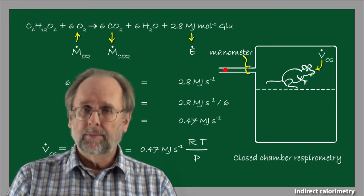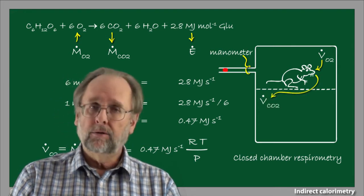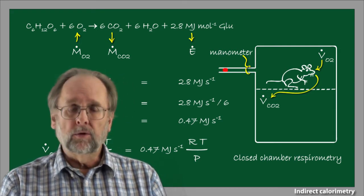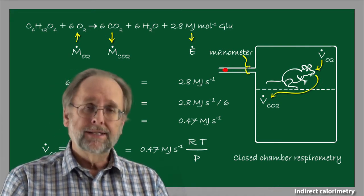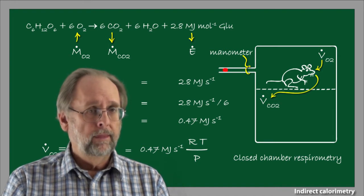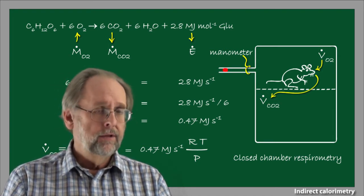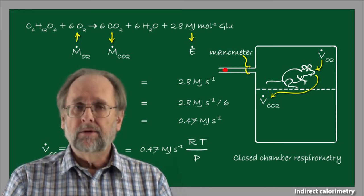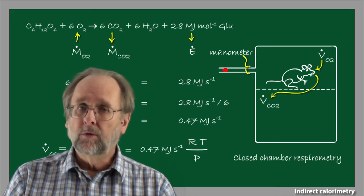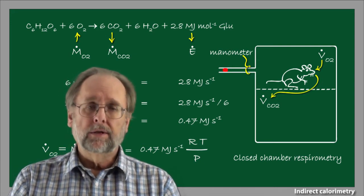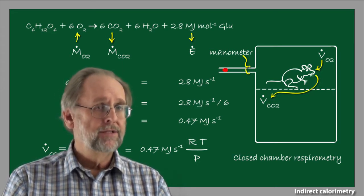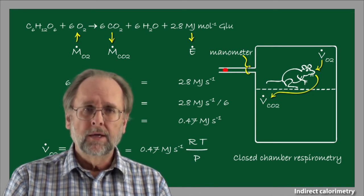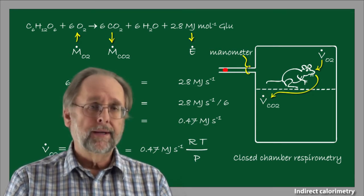As an animal consumes oxygen at a particular rate, it will also produce carbon dioxide at a rate determined by the stoichiometry of oxidation of the fuels being consumed. If the fuel is a carbohydrate, the rate of carbon dioxide production equals the rate of oxygen consumption. As the animal sits in this sealed chamber, the quantity of oxygen in the air declines and the quantity of carbon dioxide increases. Because the removal of oxygen is offset by the addition of an equal volume of carbon dioxide, the total number of gas molecules in the atmosphere within the chamber stays constant, as does the volume of gas.